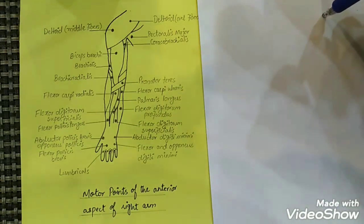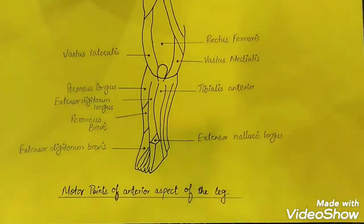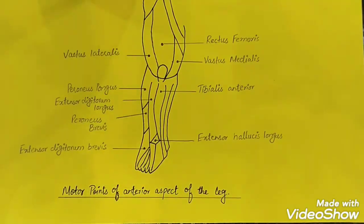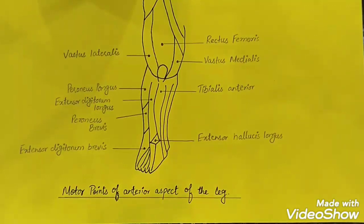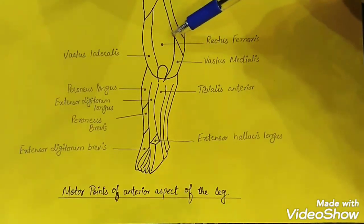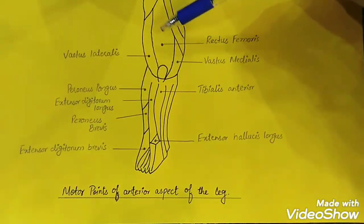Now I will tell you about the motor points of the lower limb. These are the motor points on the anterior aspect. Again, to memorize motor points, first know the muscles of that region. Talking about the motor points of the thigh, the first motor point is the rectus femoris, which lies here.